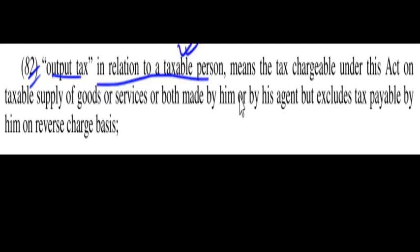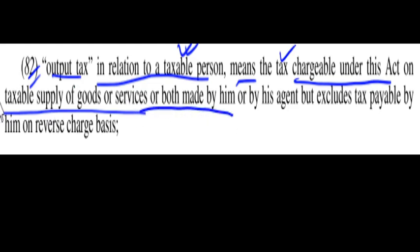In relation to a taxable person — that is, a person who is liable to pay tax — output tax means tax chargeable under this act, i.e., tax chargeable under the CGST Act on taxable supply of goods or services or both made by him.